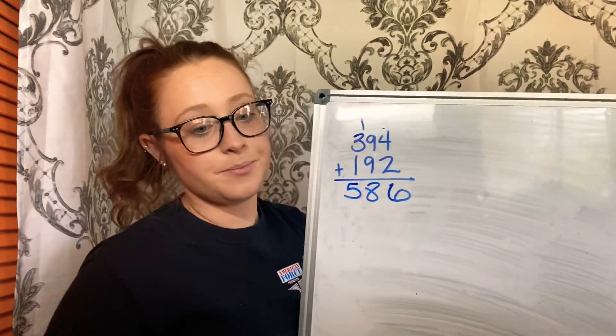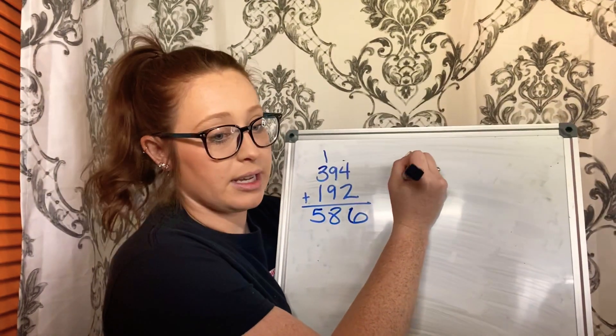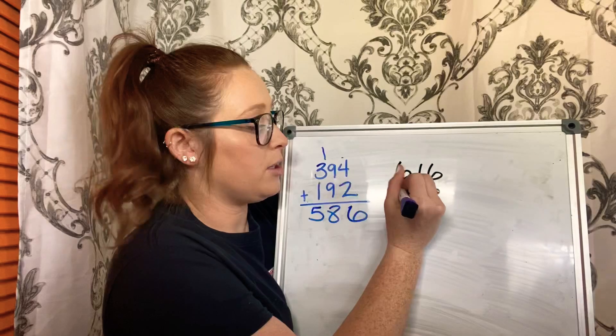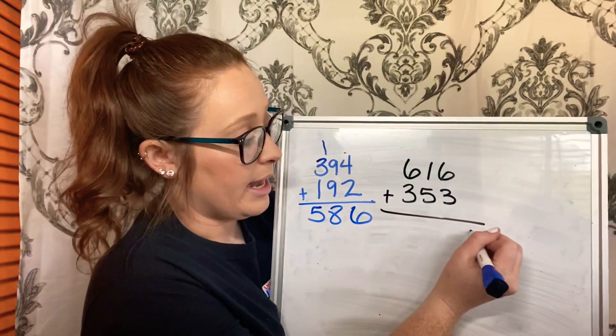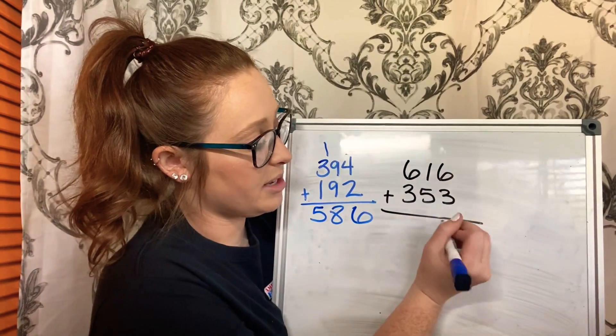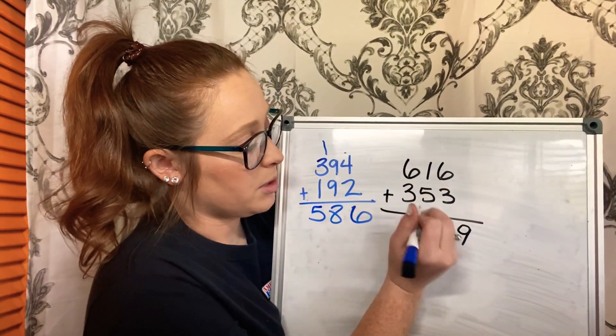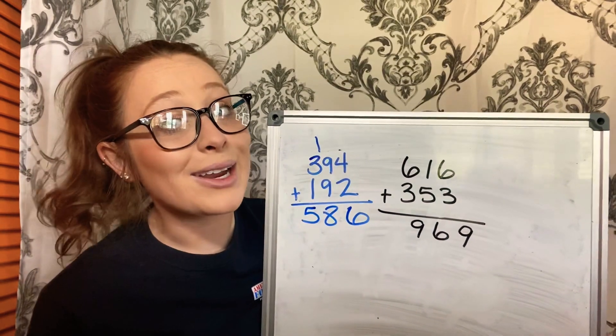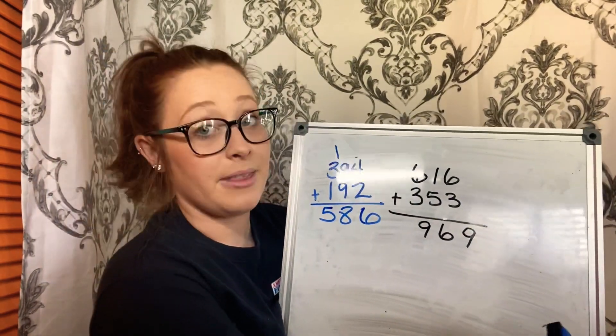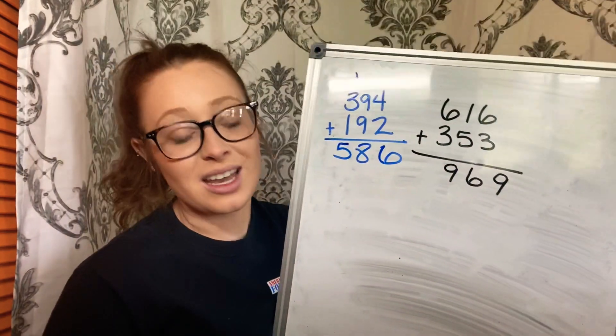Alright, let's do the next one. So, I have 616 plus 353. I've got to add them. 6 plus 3 is 9, 1 plus 5 is 6, 6 plus 3 is 9. On this one, I did not have to carry. You will not have to carry on all of them, but some of them. So, I'm just wanting to do a couple with you so you can see it.